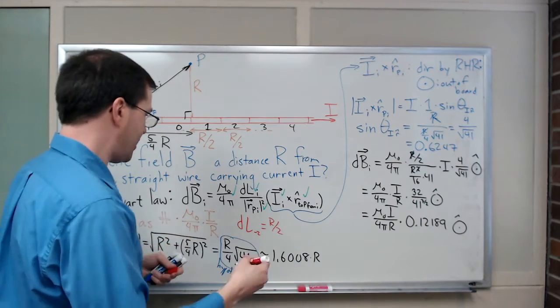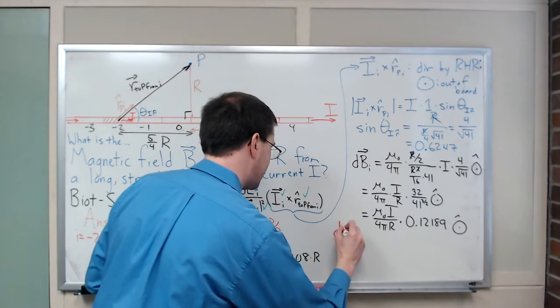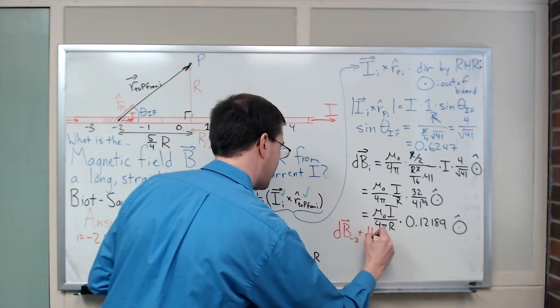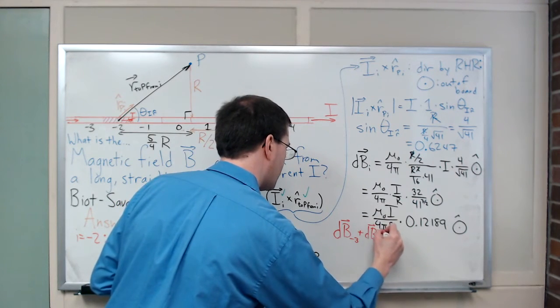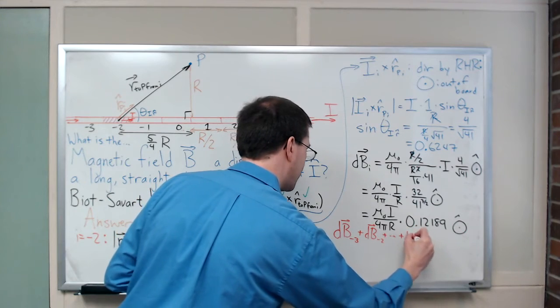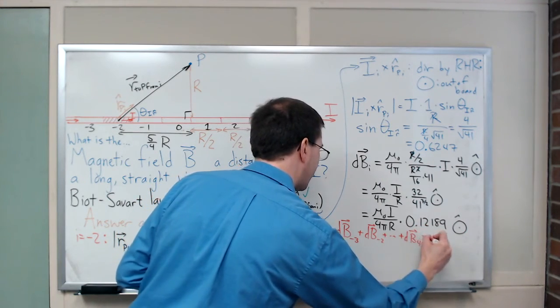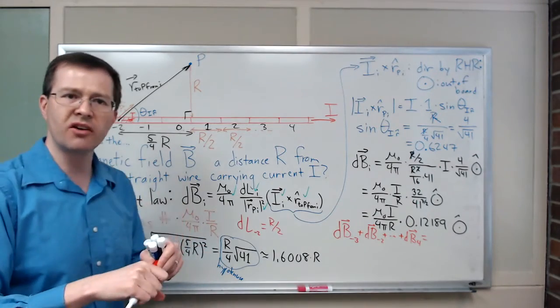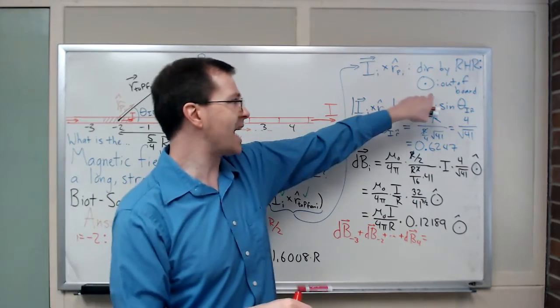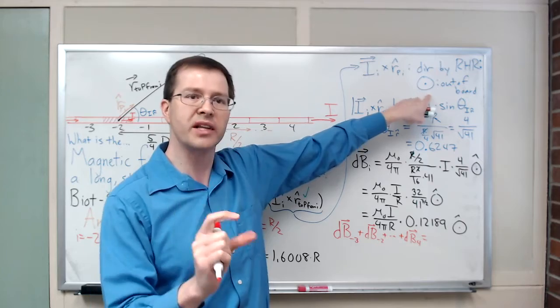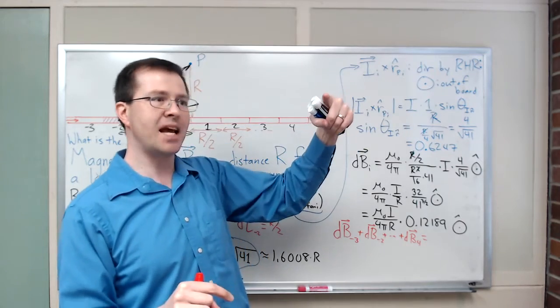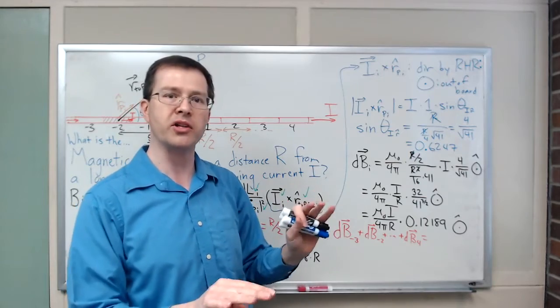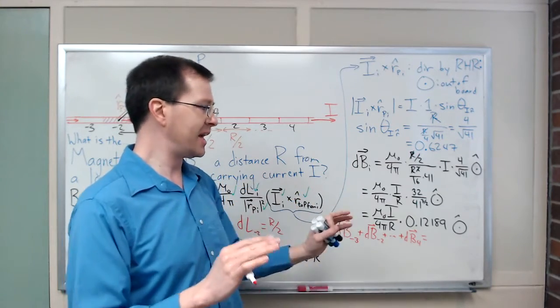If I add them all up, if I say I'm going to do dB for minus 3 plus dB for minus 2 plus dB, if I add up those 8 segments, their contributions, you can convince yourself that they're all going to have the exact same out-of-the-board direction. Each one of the segments contributes the exact same direction, so the vectors all add perfectly. We don't need to worry about vector components or anything. It's all just out of the board, they add up perfectly.